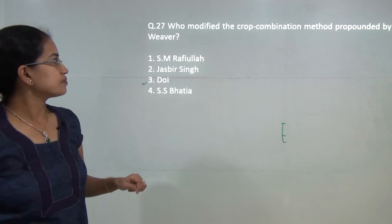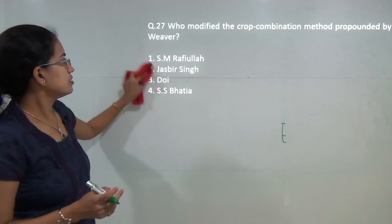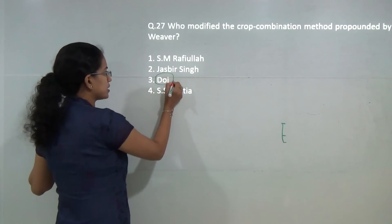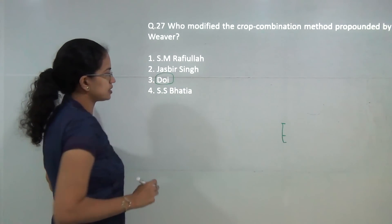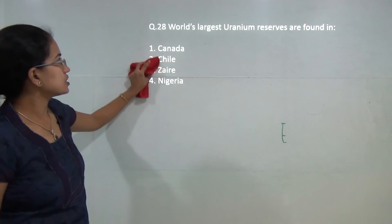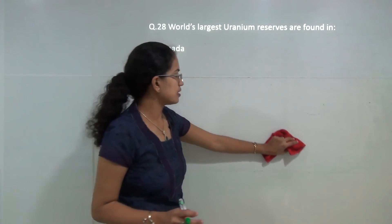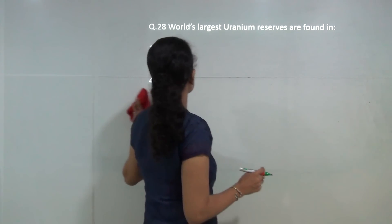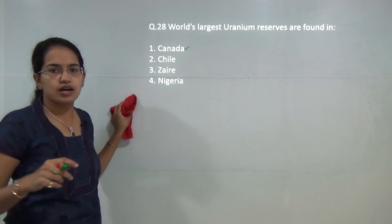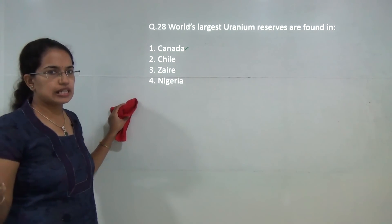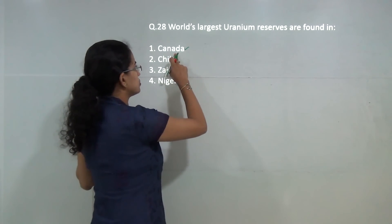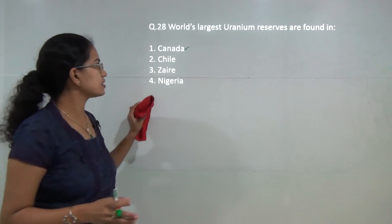The next question: the crop combination model which was given by Weaver was modified by Doi. So Doi is the correct answer. Next question on the largest uranium reserves: from the given choices the correct answer is Canada. However, in 2009 Kazakhstan overtook Canada, but since there is no other option, Canada would be the correct answer.